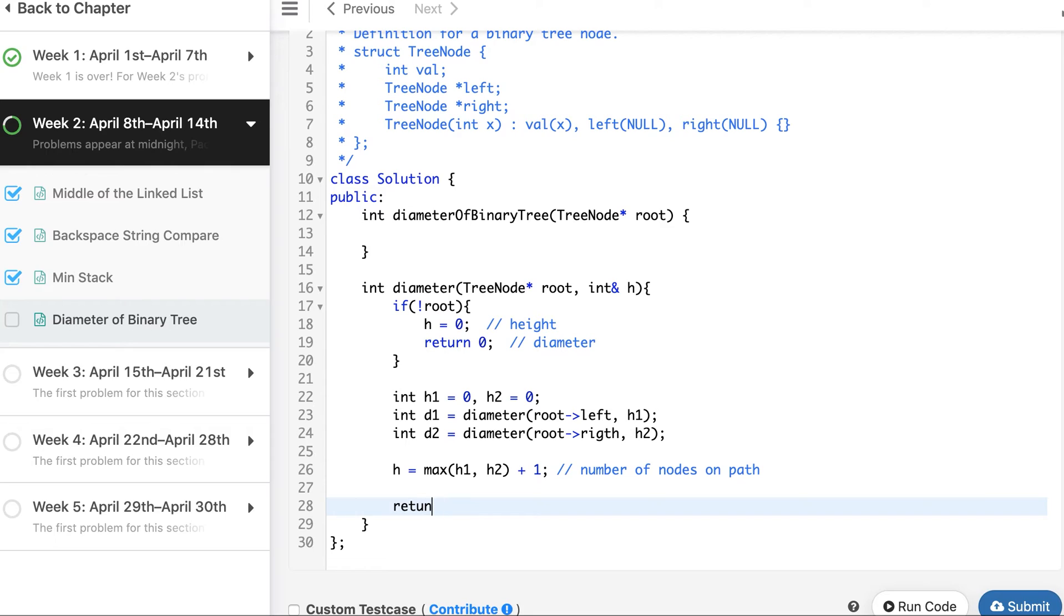And now we are done. We have to return max of three things. In C++ max has multiple ways you can call max. One is that you provide two values then it will pick the maximum of these two. Other is that you provide an initializer list. So if you have more than two values you can provide initializer list. Because here we have d1, we have d2, and we have h1 plus h2. So we have three values, so we can provide initializer list. It will return the maximum of that.